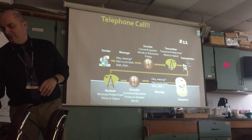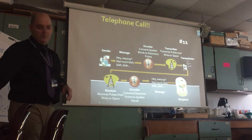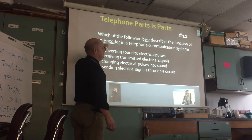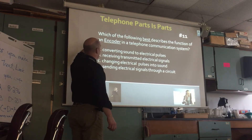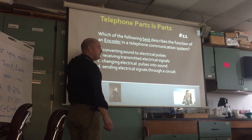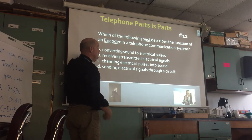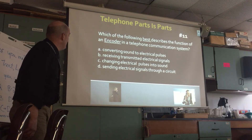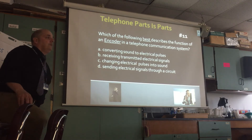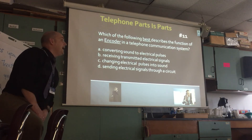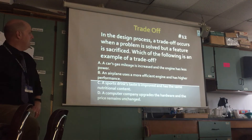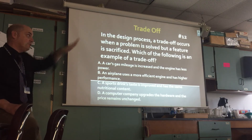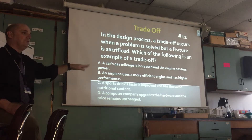Here's the question: 'Which of the following best describes the function of an encoder in a telephone communication system?' Does it convert sound to pulses? Receive transmitted signals? Change pulses into sound? Or send the electrical signal to the cell tower? An encoder encodes — it takes your words and turns them into pulses so they can be transmitted through the air to a cell tower or through the wires. The answer is A.